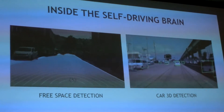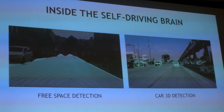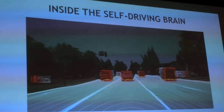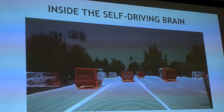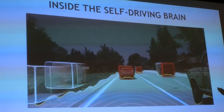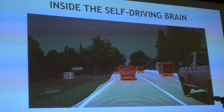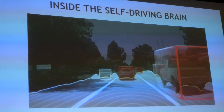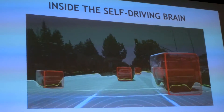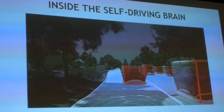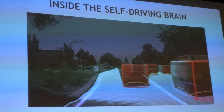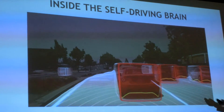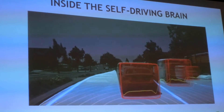What we can do is run these different neural nets all together. In this case, we have three neural nets: one running 3D bounding boxes so we understand the other vehicles on the road, one running the open space detection, and a third running lane markings so we're able to detect the lane markings.